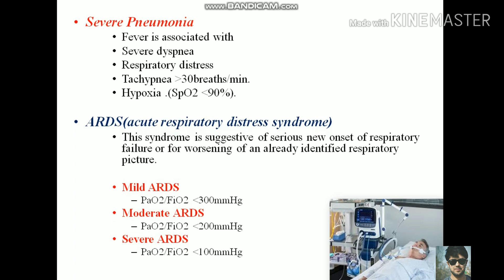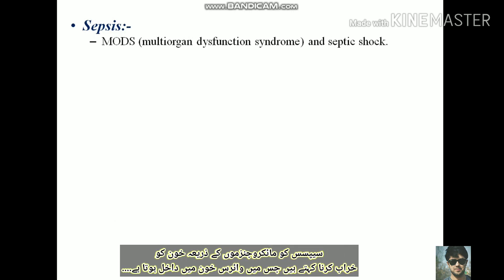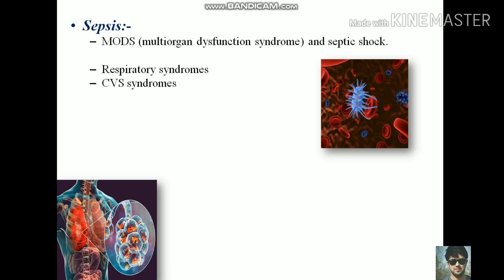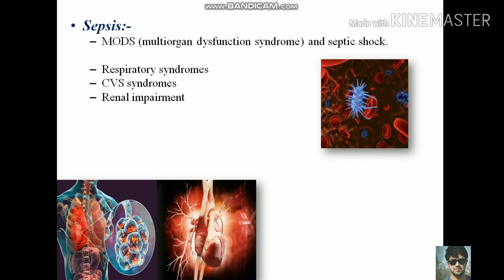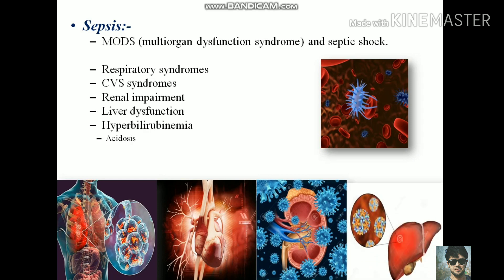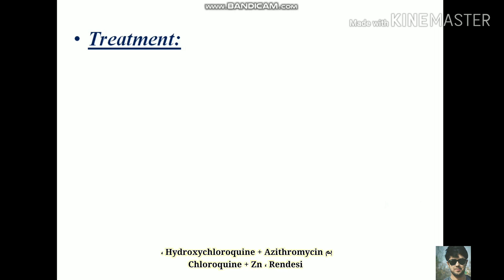ARDS occurs when there is high consolidation of the alveoli, which fail to conduct respiration. Sepsis is the condition in which microorganisms gain access to the blood circulation, causing blood poisoning, leading to multiple organ dysfunction syndrome and septic shock. It also causes respiratory, cardiovascular, and renal impairment including decreased urine output, liver dysfunction, hyperbilirubinemia, acidosis, elevated lactate levels, coagulopathy, and thrombocytopenia.